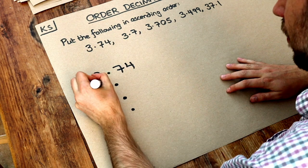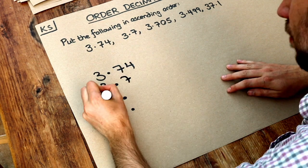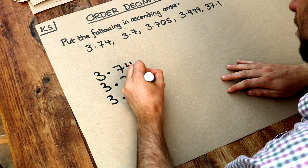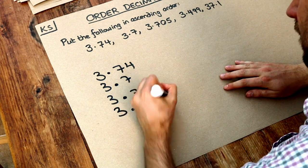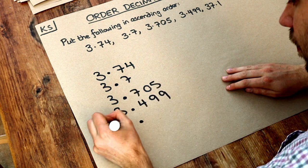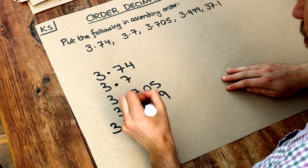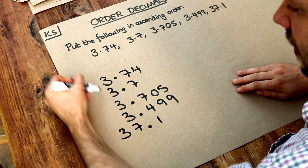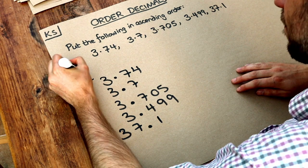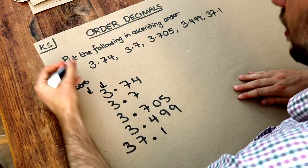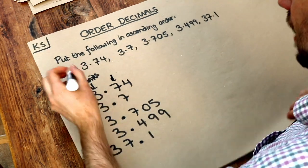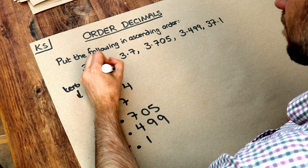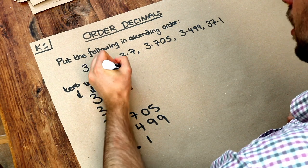Then we've got 3.7, then 3.705, then 3.49, and then we've got 37.1. And this here, that's the tens digit, that's the units digit, that's the tenths digit, and that's the hundredths digit.